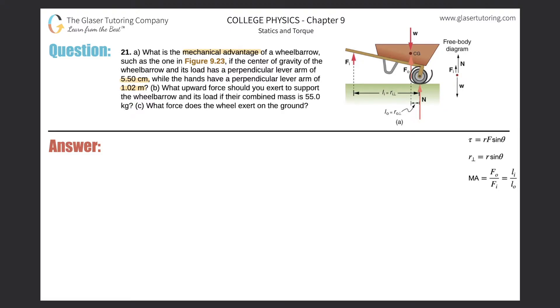And we now have a couple of relative distances between the applied forces and the fulcrum. So it tells us that the perpendicular lever arm of the center of gravity of the wheelbarrow is 5.5 centimeters, which is going to be this little distance right in here between the fulcrum and the center of gravity line of action. And then it also tells us the perpendicular lever arm from where the input force is being applied to the fulcrum is going to be 1.02 meters, so that's this total distance.